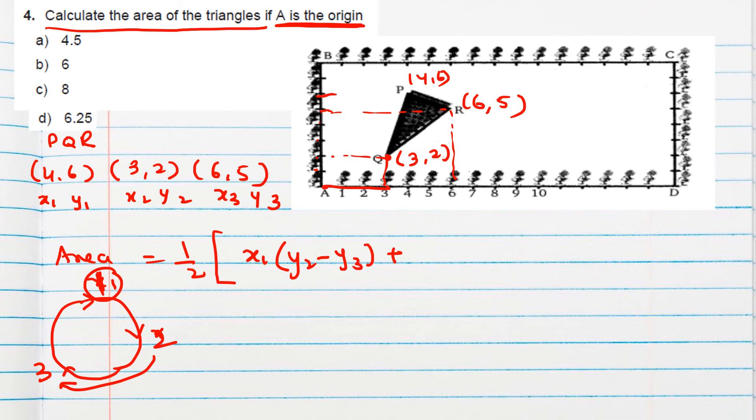Okay. Plus next one number will be x2. So I should take y3 minus y1. Then next number I should take x3. So y1 minus y2. This way you can remember your formula. You can make a cycle, rough cycle.